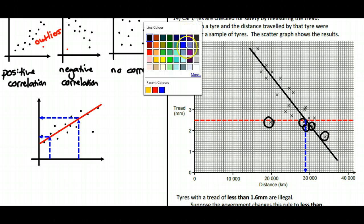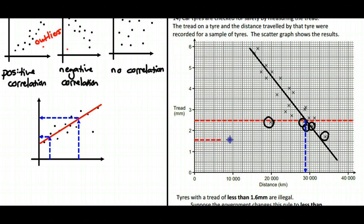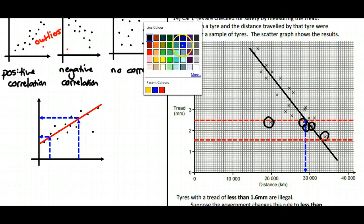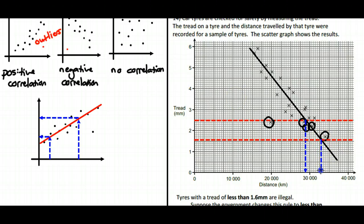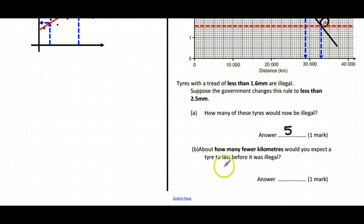However, if we go back to the old one, which is 1.6, you can see that you'd expect your tyres to last longer before they became illegal. This appears to be just over 32,000. So roughly speaking, because we can't guarantee that our lines are that accurate, it appears that it might be around about 3,000 kilometres difference between the 1.6 millimetre legality and the 2.5.